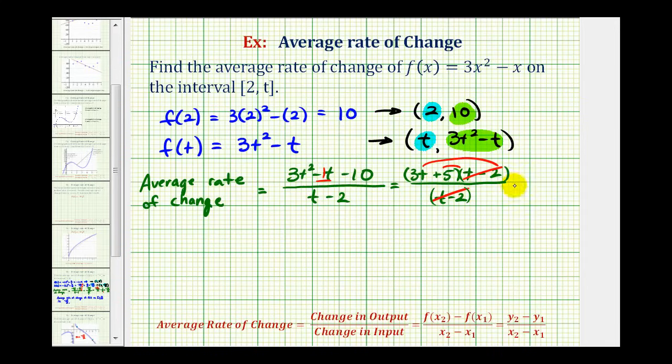So our average rate of change is just 3t + 5. The average rate of change on the closed interval from 2 to t is equal to 3t + 5. This means for any value of t greater than 2, we can use this formula to determine the average rate of change for that interval.